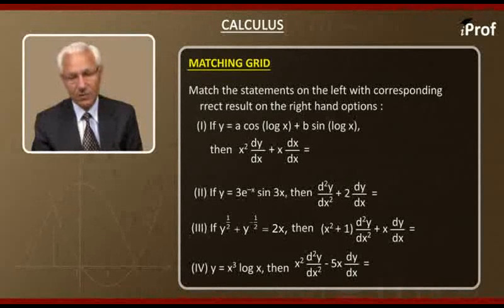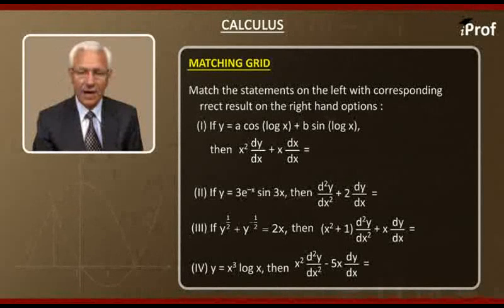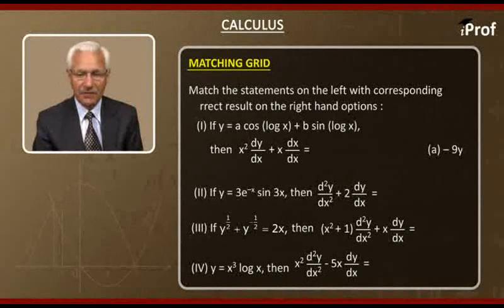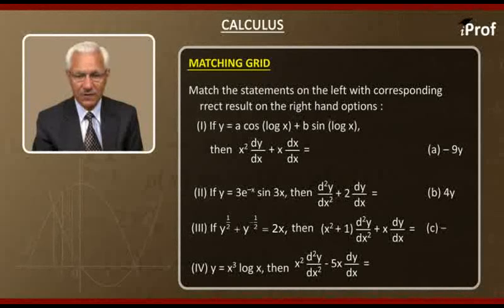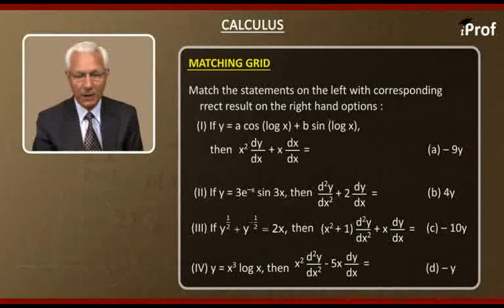Now the options on the right hand side are: a) minus 9y, b) 4y, c) minus 10y, and d) minus y.